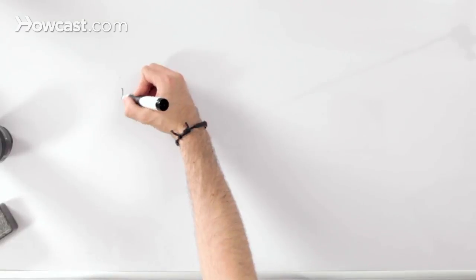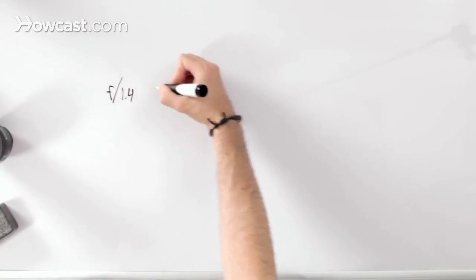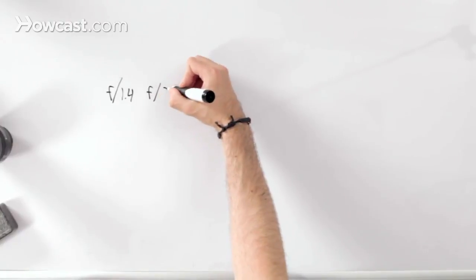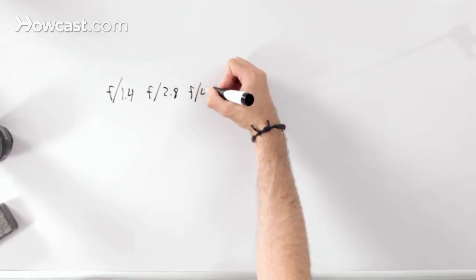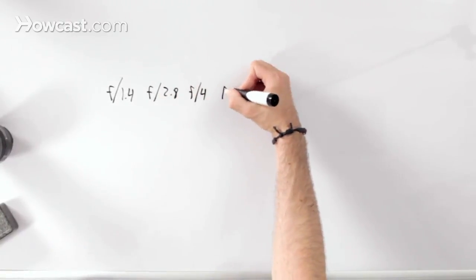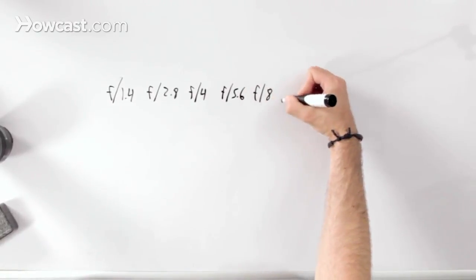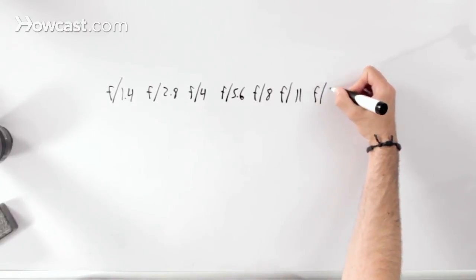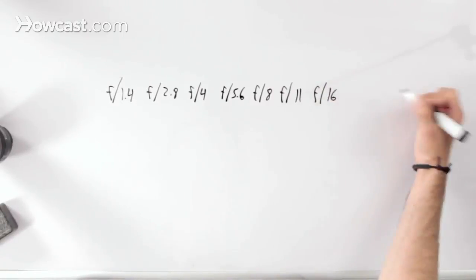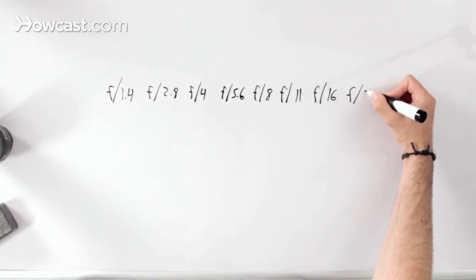These are full stops. It starts at f1.4, goes to f2.8, f4, f5.6, f8, f11, f16, and we'll stop at f22 because most lenses don't go much higher than that.